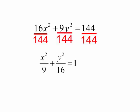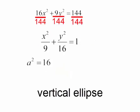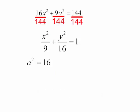Now notice that the largest denominator is under the y squared term. This will be a vertical ellipse. So a squared will equal 16, which means a equals 4. Now you may think a is equal to plus or minus 4, but remember we are referring to distance. b squared will equal 9, so b will equal 3.